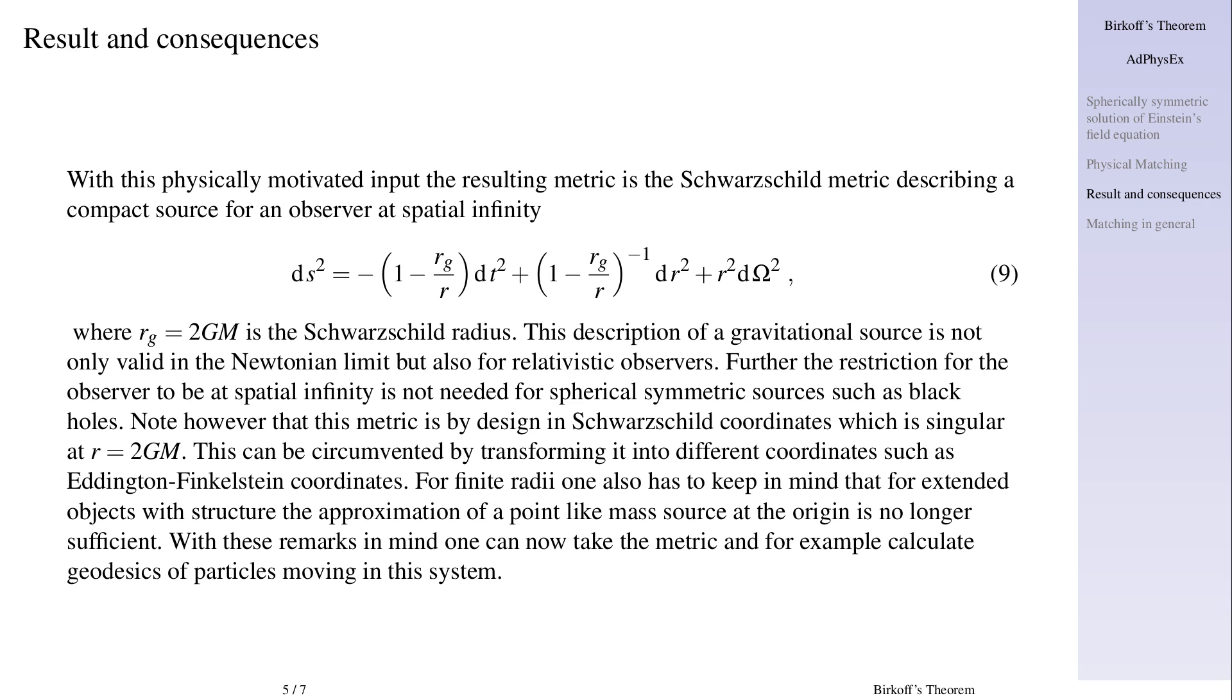Where r g equals two GM is the Schwarzschild radius. This description of a gravitational source is not only valid in the Newtonian limit but also for relativistic observers. Further the restriction for the observer to be at spatial infinity is not needed for spherical symmetric sources such as black holes. Note however that this metric is by design in Schwarzschild coordinates which is singular at r equals two GM.